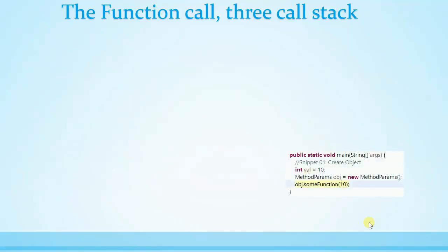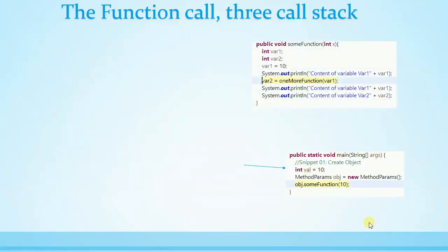Let us see how the call stack is involved in these function calls. We have static void main, and from it we create an object for MethodParams, then make a call to the sum function — which is a member function of MethodParams — passing a constant value as the parameter. The sum function makes a call to oneMoreFunction. The yellow line shows where execution currently is: in void main we are at the sum function call, inside sum we are calling oneMoreFunction, and inside oneMoreFunction execution is at the return statement for var2.